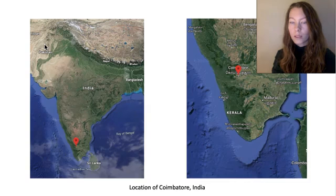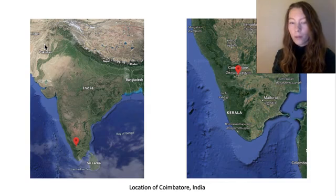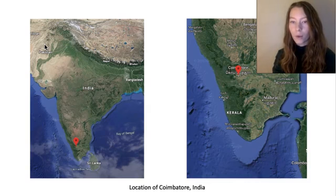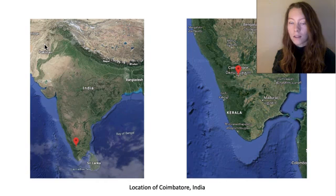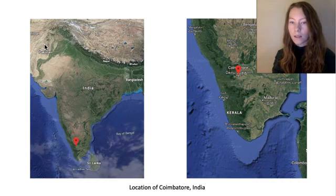When researching a topic of this breadth, it can help to focus on a specific geographic area, and so my focus turned to human-elephant conflict within the Coimbatore Forest Division. This area is located within the southern Indian state of Tamil Nadu, near the western Ghats. It is an ideal location to study because it contains large elephant populations, viable elephant habitats, and multiple elephant corridors.